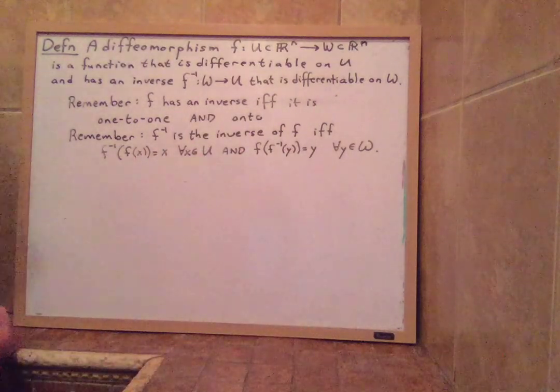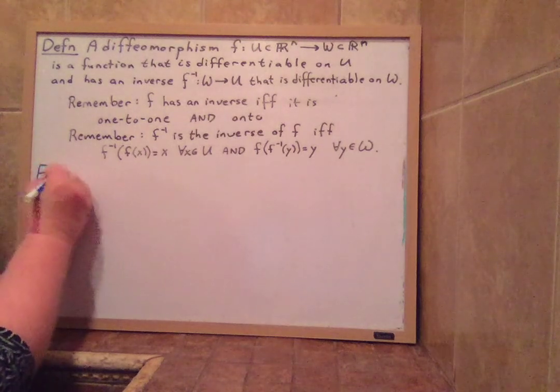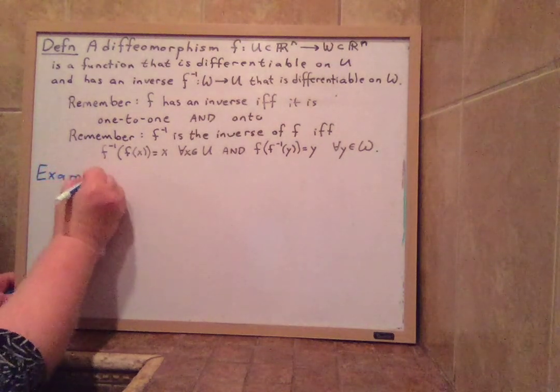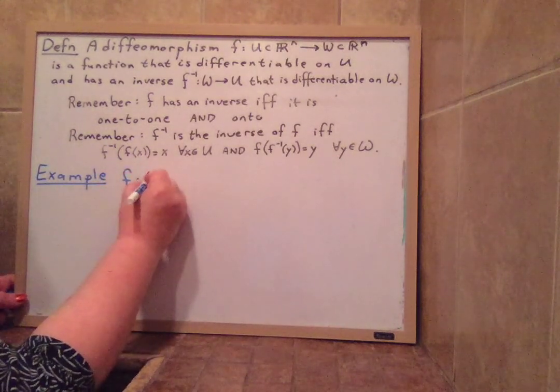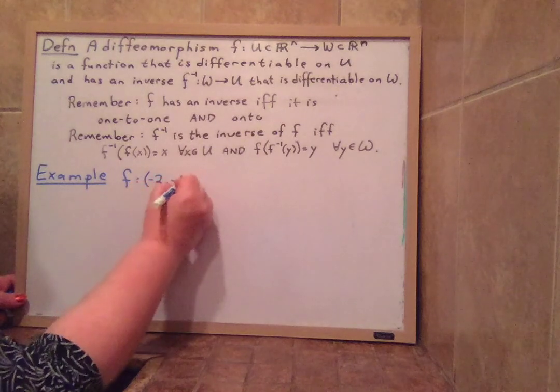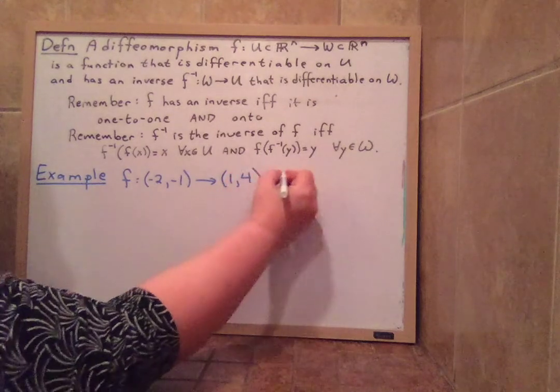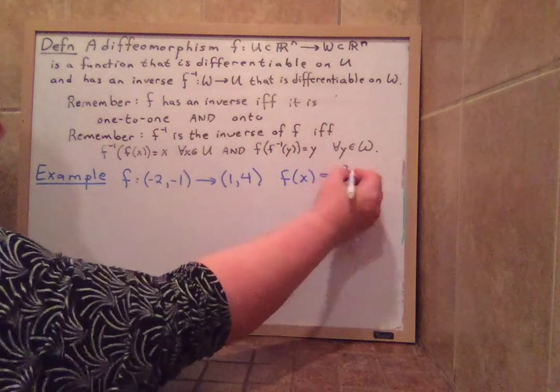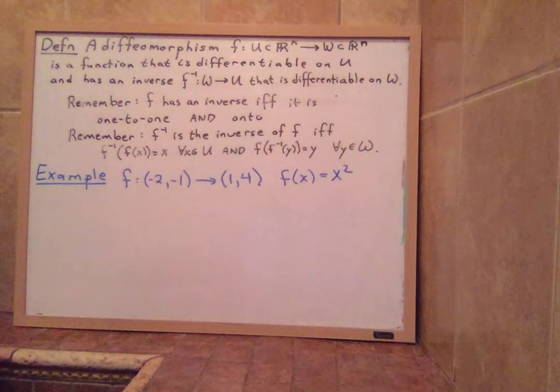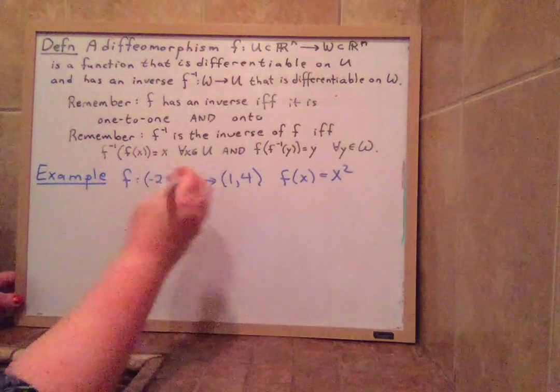So this is very straightforward. We can do an example, a classic example. Suppose we take the map F from negative three, negative one, to one comma nine, where F of X is equal to X squared. So this function looks like it's going to be smooth, right? So we have to check the rules.